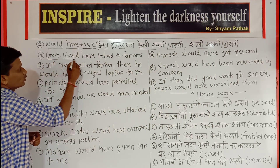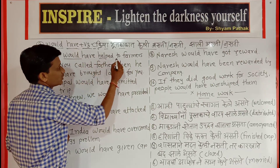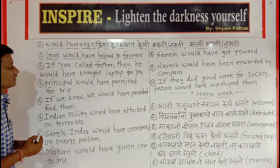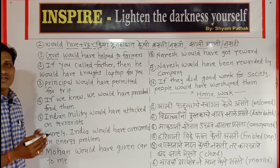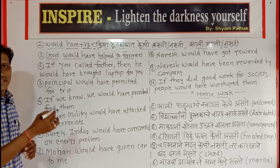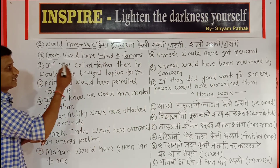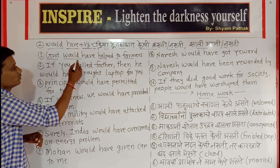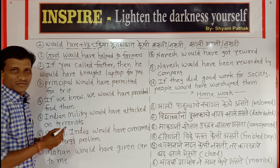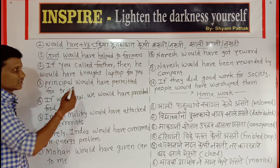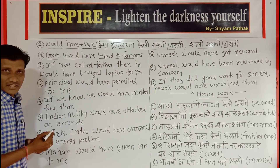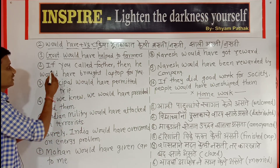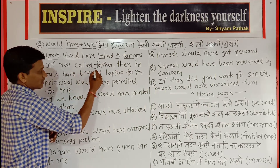Our first sentence is: 'Government would have helped the farmers.' In Marathi: 'Shasna ne shet karenna madat ke li asti.' The negative form is: 'Government wouldn't have helped the farmers.' This is how you make the negative for each sentence.